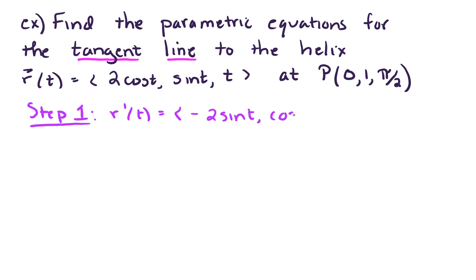Step two, let's find r prime of t0. Now the question that we're facing is what is this value of t? We are given a point P which looks like 0, 1, pi over 2.